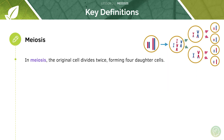In meiosis the original cell divides twice, forming four daughter cells. This always used to really confuse me — I didn't quite understand how if one cell divides twice we get four cells. The best way of working it out is just to have a look at this diagram here. This is our parent cell or our original cell. Here it's gone through interphase.